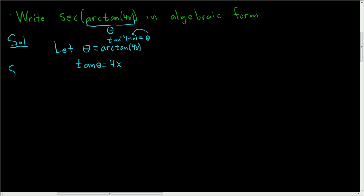Now recall, SOHCAHTOA. So tangent is opposite over adjacent. So what we'll do is we'll write this as 4x over 1, and this is opposite over adjacent.